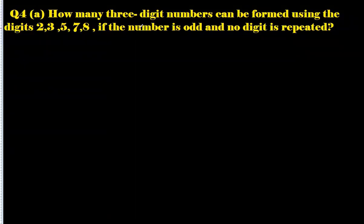How many three-digit numbers can you form using these digits if the number is odd and no digit is repeated? We can see that odd will be decided by 3, 5, and 7 at the unit digit.